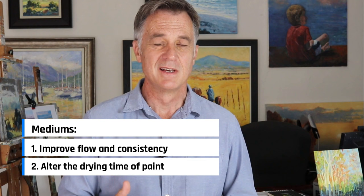So what exactly is a medium? Well, basically, it's any type of additive that you put with your oil paint to make it perform in a certain way. An oil painting medium is used for two reasons: to improve the consistency of the paint so that it flows better and is easier to work with, and to either slow down or speed up the drying process.